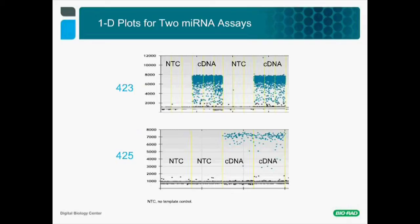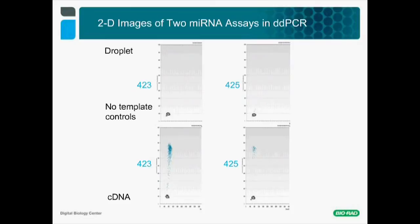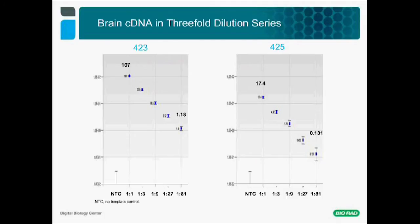This figure is a different illustration of the same results, this time in a 2D plot, which allows visualization of both types of fluorescence for one or multiple wells—particularly useful when detecting more than one target. Once cycling conditions are optimized, the assays can be used for target quantification. We illustrate the precision of quantification in a serial dilution of target cDNAs. Detection of miRNA 423 is pushed down to about 20 copies per well, while detection of miRNA 425 is pushed down to just a couple of copies per well.